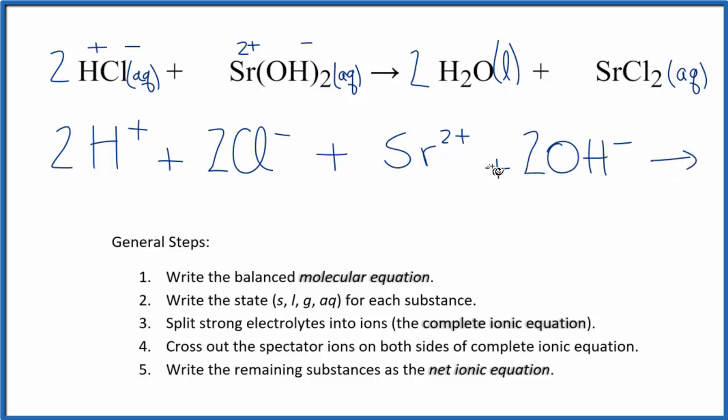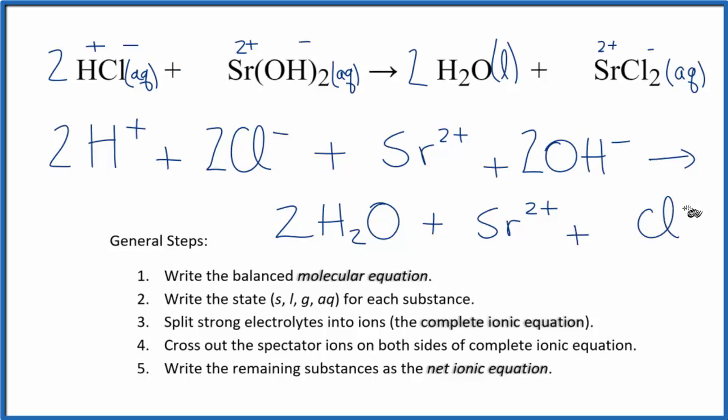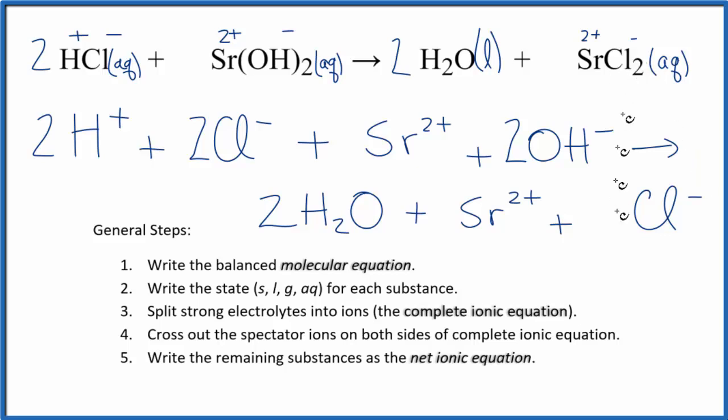Those are the reactants. For the products, liquids in net ionic equations, we don't split those apart. So we have 2H2O plus, we said the strontium was 2 plus, that chlorine had a negative charge, 1 minus, Sr2+, plus Cl minus, and we have two of those. So this is what we call the complete ionic equation, sometimes called the total ionic equation.